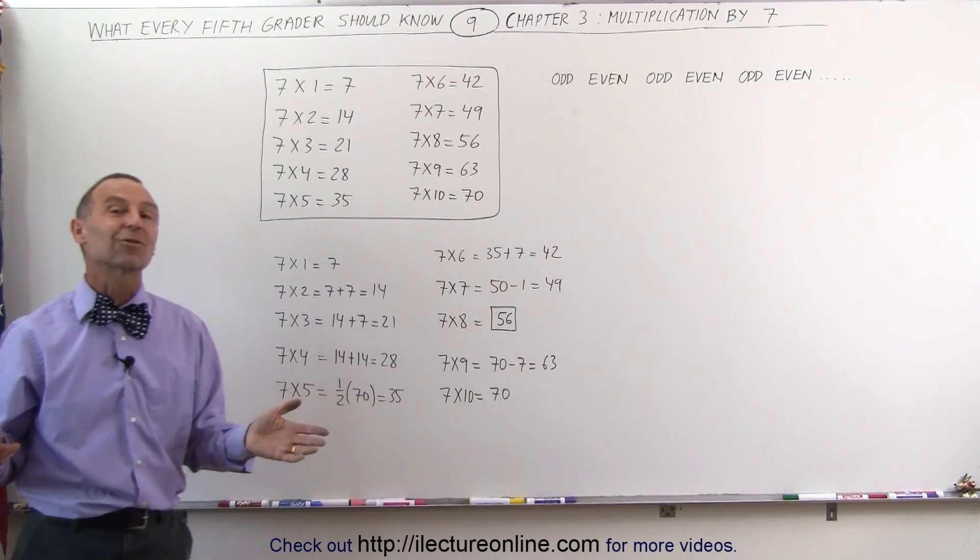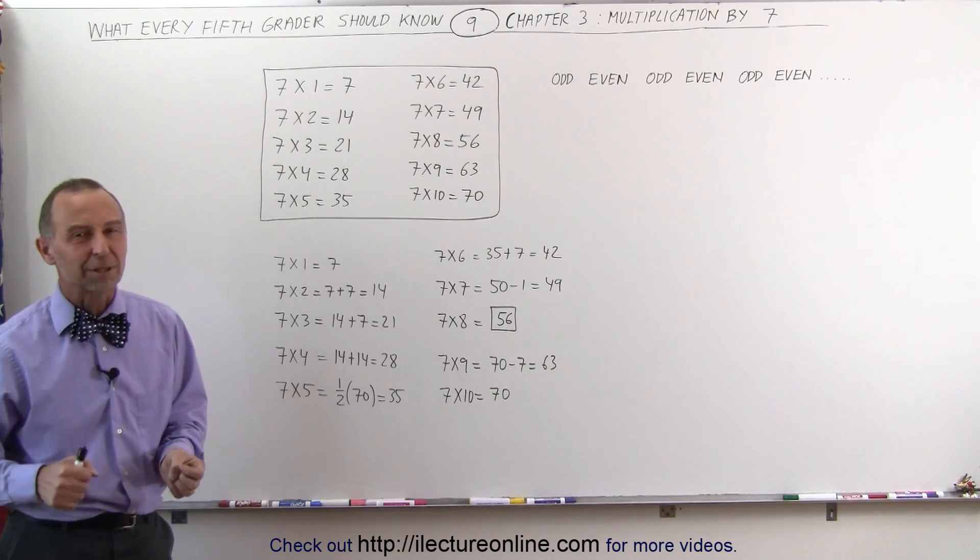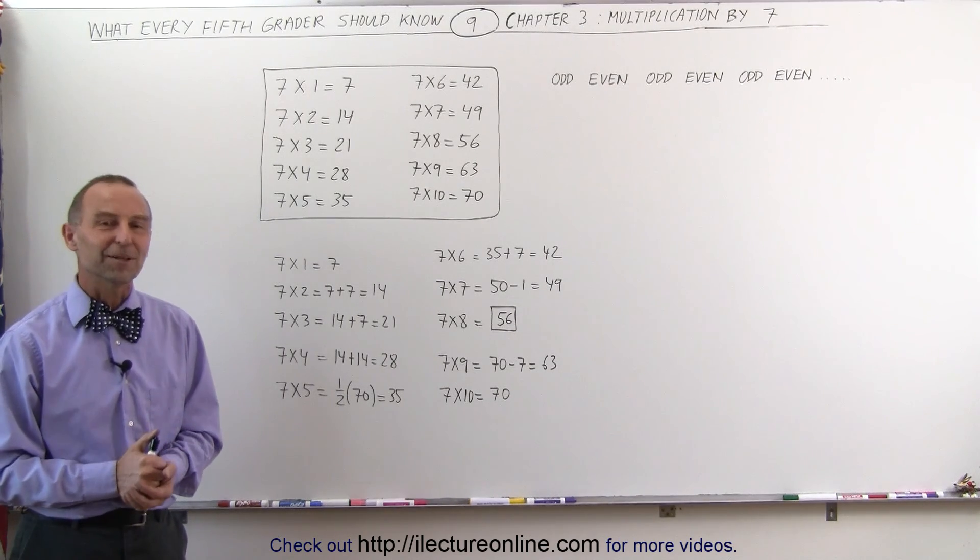So here are some nice tricks to help you multiply times 7 to make the job a little bit easier. And that's how it's done.